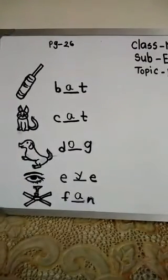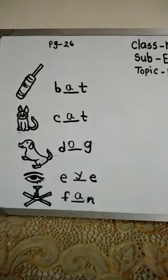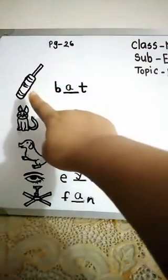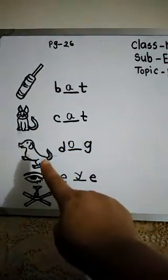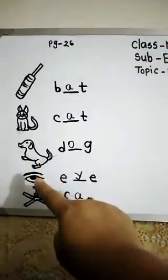Now you can see this book. I draw here some pictures. I hope everyone see this book. At first, I draw here bat, then cat, then I draw here dog, then eye, then fan.